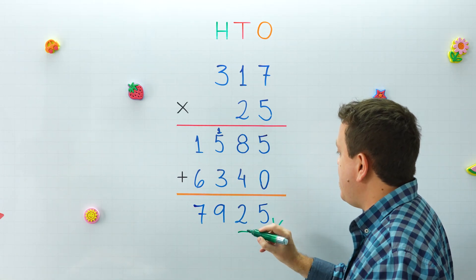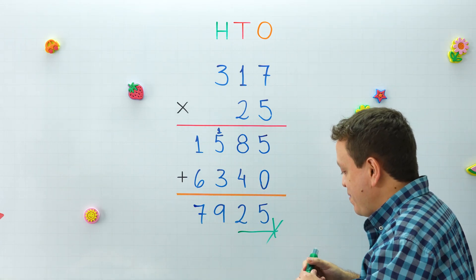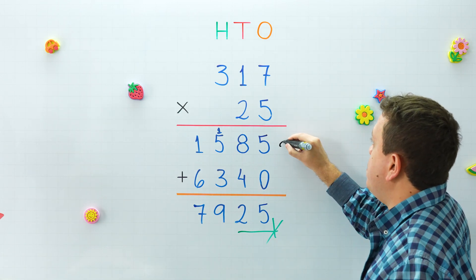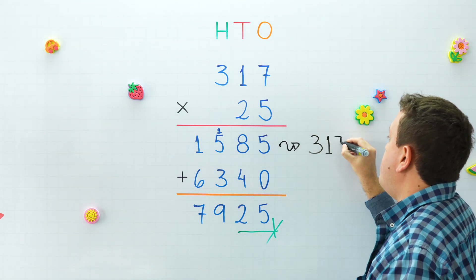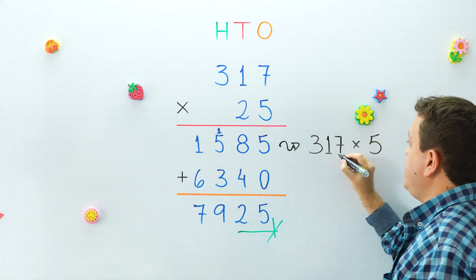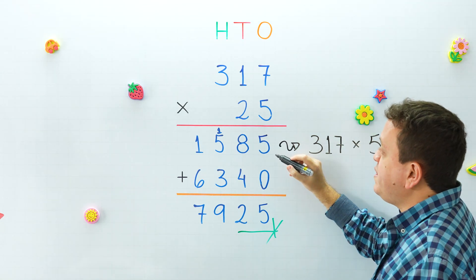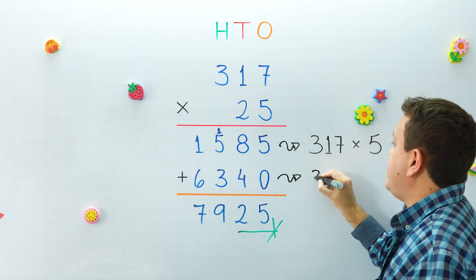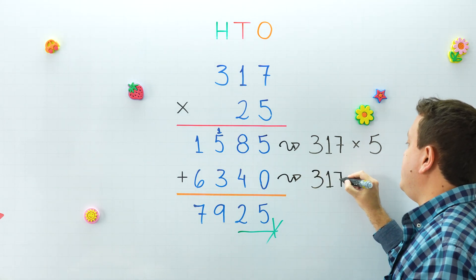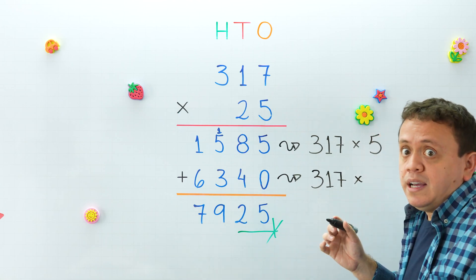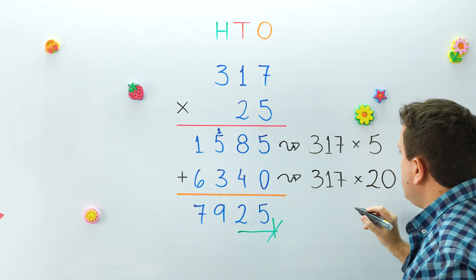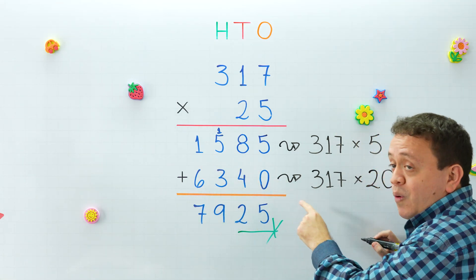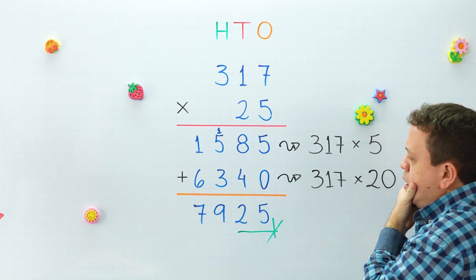Do you remember the three steps? In the first step we multiplied 317 by five ones — 317 times 5 equals 1,585. In the second step we multiplied 317 by two tens or 20 — 317 times 20 equals 6,340.